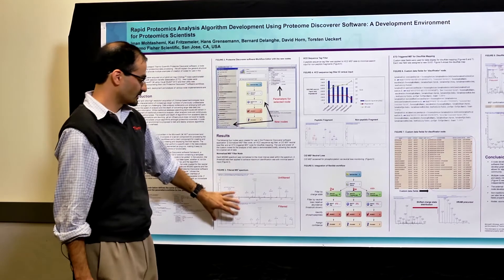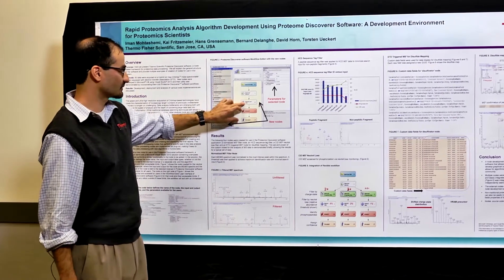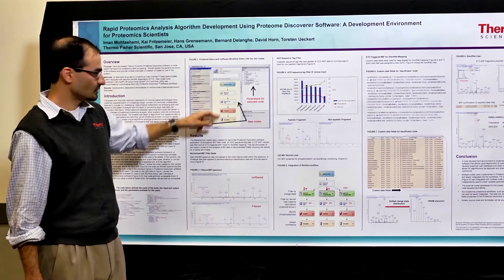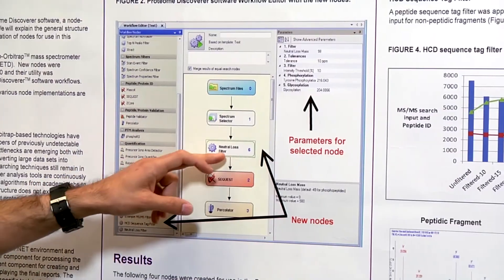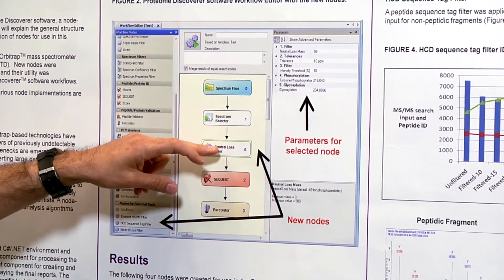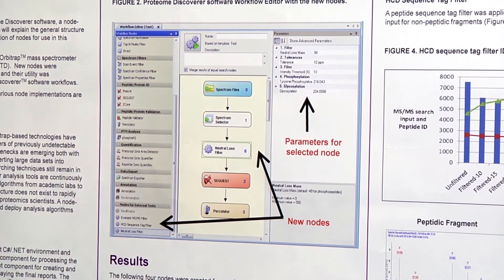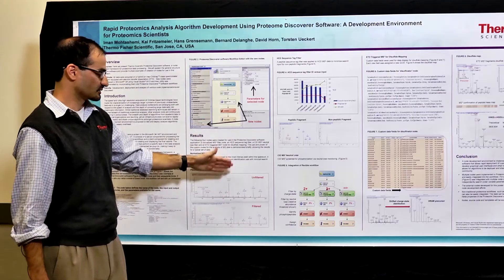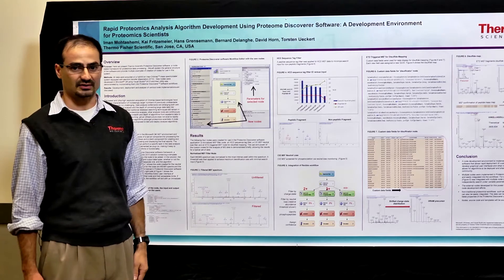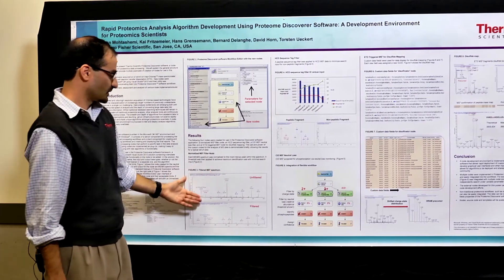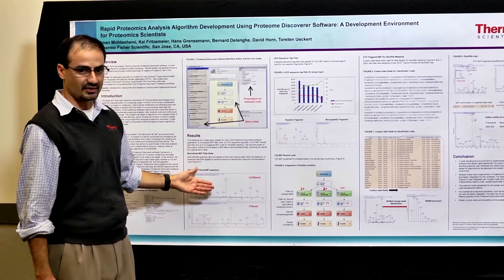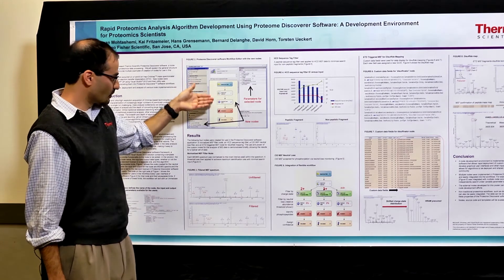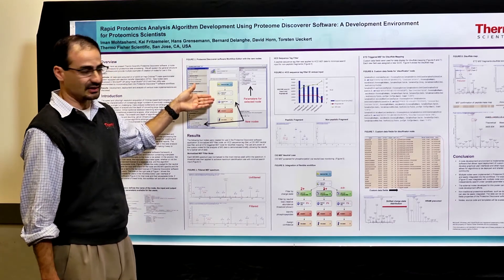Here I have some examples of a neutral loss filter node that sits between the spectrum selector and a search node. You can see that when you drag and drop the filter within these two node areas, you can get the output without actually altering any other part of the Discoverer program. The display features and the reporting features are not affected by any node development — the code within this encapsulated region.